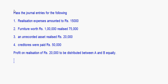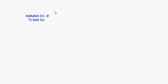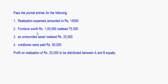For the first item — realization expenses of rupees 15,000 — the entry is: Realization Account debit to Bank Account, rupees 15,000. The next item is furniture worth rupees 1 lakh realized at rupees 75,000.